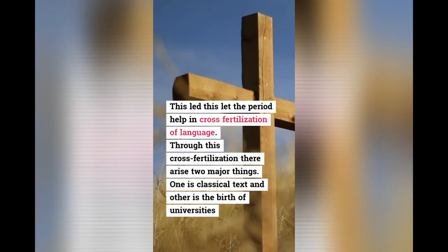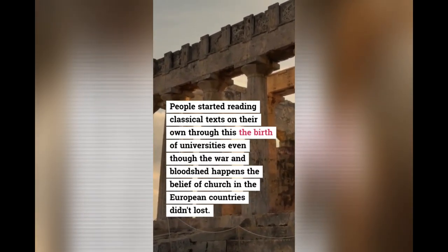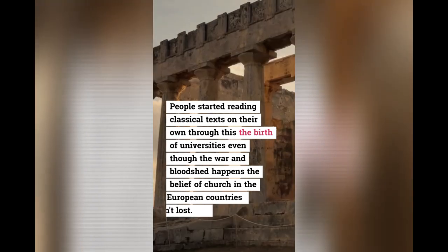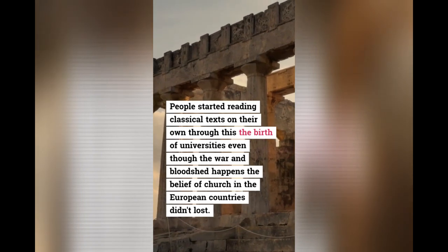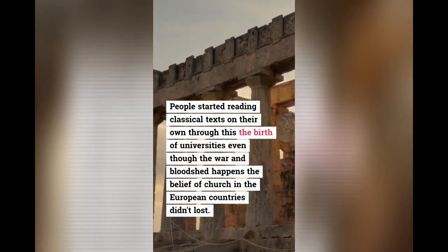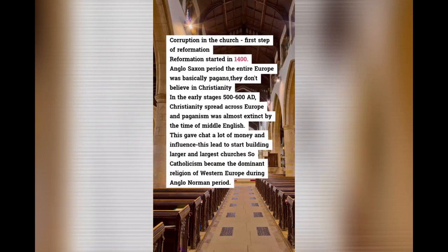The two major outcomes were: first, the revival of classical texts, and second, the birth of universities. People started reading classical texts on their own. Even though war and bloodshed occurred, belief in the church in European countries didn't disappear but grew widely. However, educated people found corruption in the church, and this led to the first step of reformation, which started around 1400.